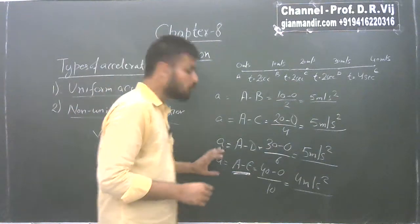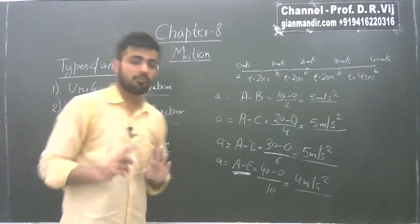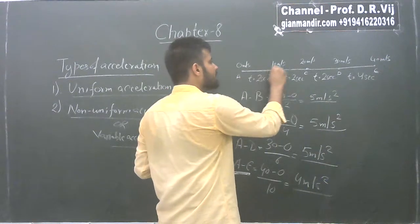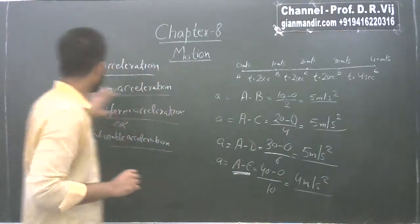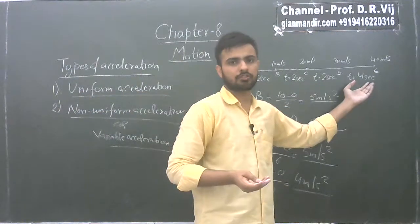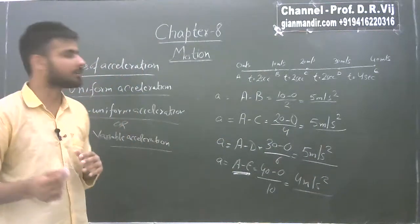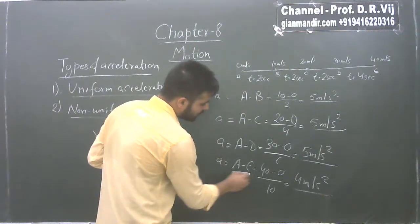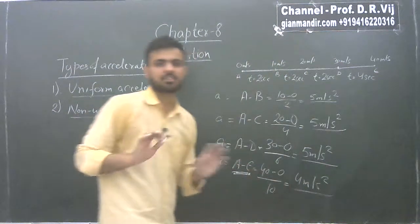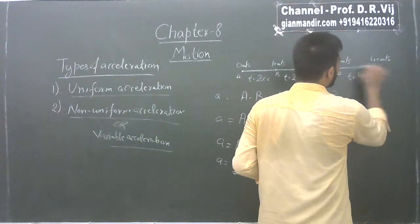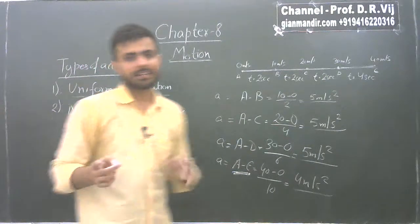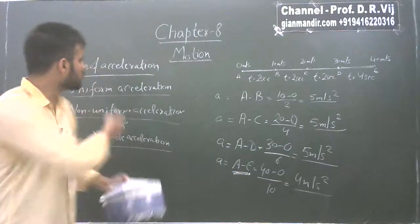So we say the body now has non-uniform acceleration. Uniform acceleration: velocity changes by equal amounts at equal intervals of time. Non-uniform acceleration: velocity changes at unequal intervals of time. From A to D the body was in uniform acceleration, but as soon as it moved from D to E it became non-uniformly accelerated. These are the two types of acceleration.